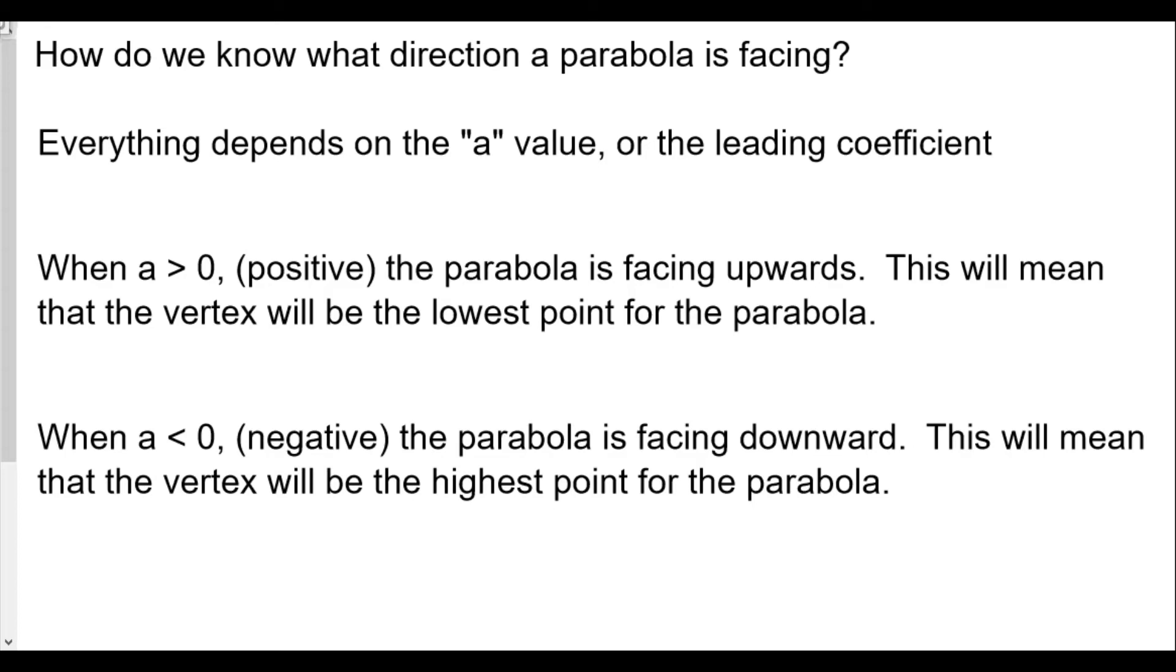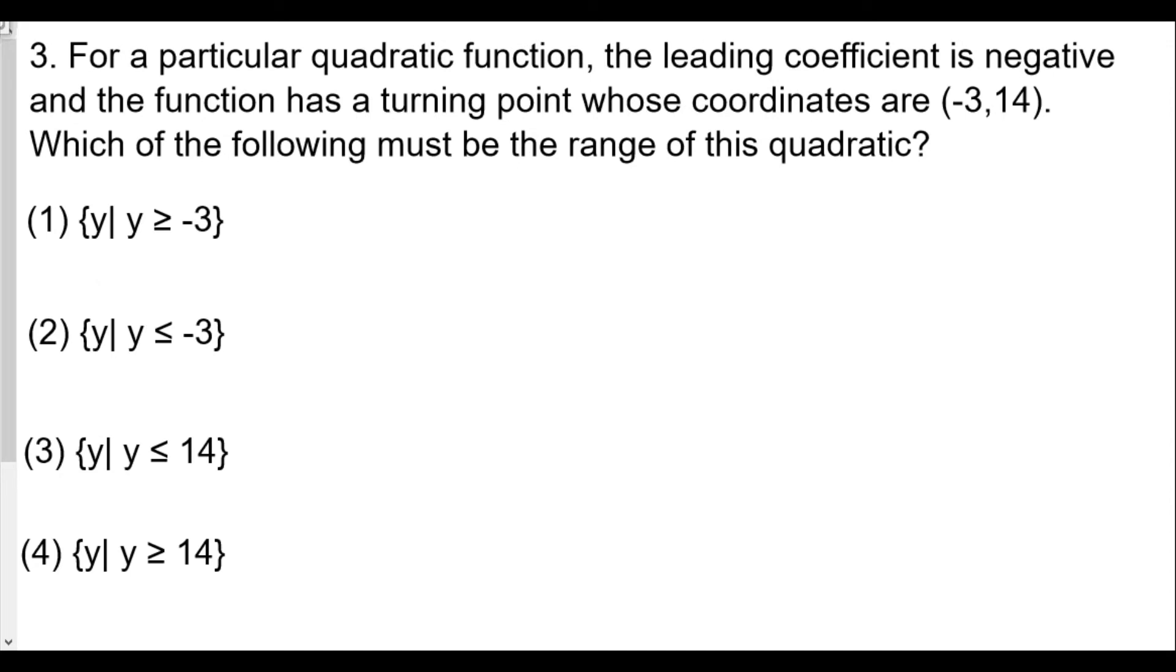Let's go back to our question. We see here that the leading coefficient is negative, which means the parabola will be facing downwards like this. The turning point, the vertex, this point right here where the graph turns, is going to be negative three comma 14. The range talks about all the values that y will be able to hit. We see that the highest point here is 14 because the range talks about the y values. Therefore, the highest point is 14, and all the values of y will be 14 or less. So our range will be y is less than or equal to 14 because the parabola faces downwards.